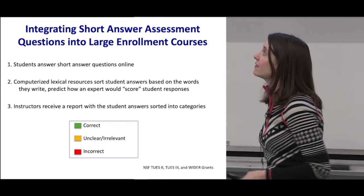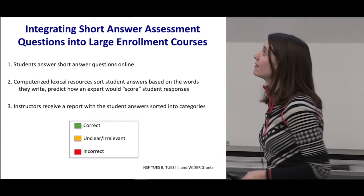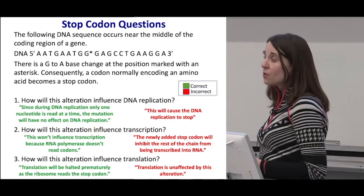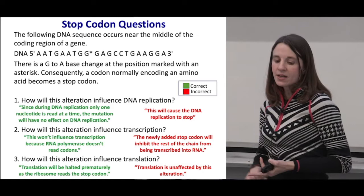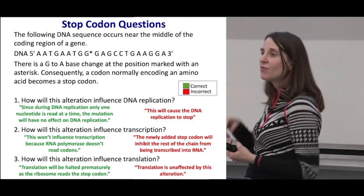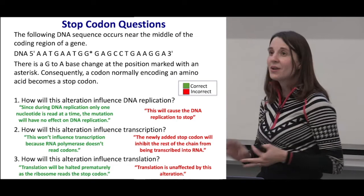Here's an example of one of the questions we asked in a genetics class — we call this the stop codon question. Students would see a DNA sequence occurring near the middle of the coding region of a gene, be told there's a G to A base change at the position marked with an asterisk, and consequently a codon that normally encodes an amino acid would become a stop codon. They had to answer how this change would affect DNA replication, transcription, and translation — the processes of the central dogma of biology.